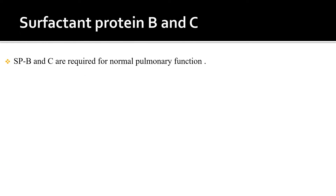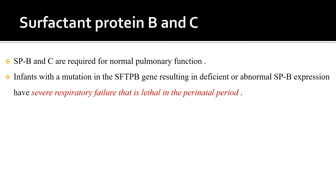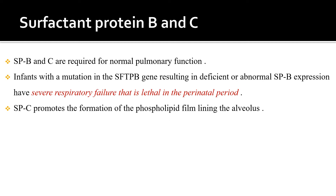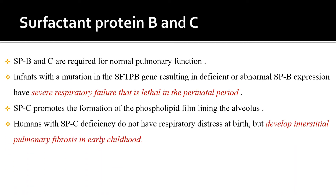Regarding the protein components of surfactant, surfactant contains proteins B and C, and also proteins A and D. Surfactant proteins B and C are required for normal pulmonary function. Infants with mutations in the surfactant protein B gene resulting in deficient or abnormal surfactant protein B expression have severe respiratory failure in the perinatal period. Surfactant protein C promotes the formation of phospholipid film lining the alveoli. Infants with surfactant protein C deficiency do not have respiratory distress initially; rather, they develop interstitial pulmonary fibrosis in early childhood.